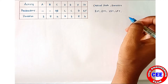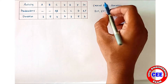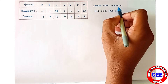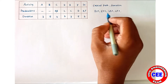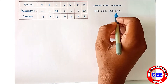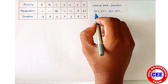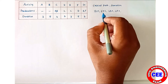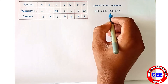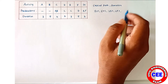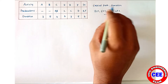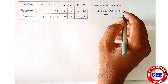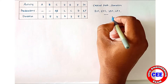In this problem, we have to find out the critical path and critical duration, then EST, EFT, LST, LFT — that is the earliest start time, earliest finish time, latest start time, and latest finish time. So we can use the critical path method, that is CPM.